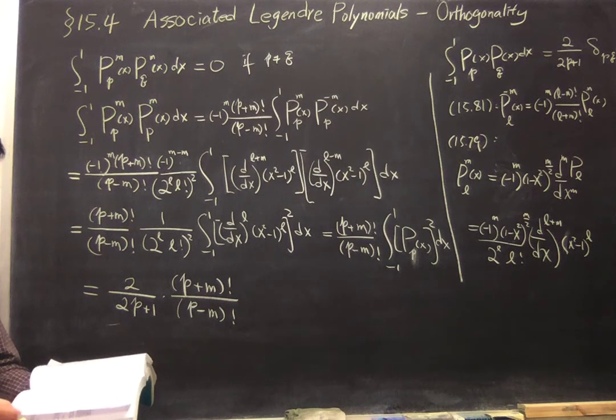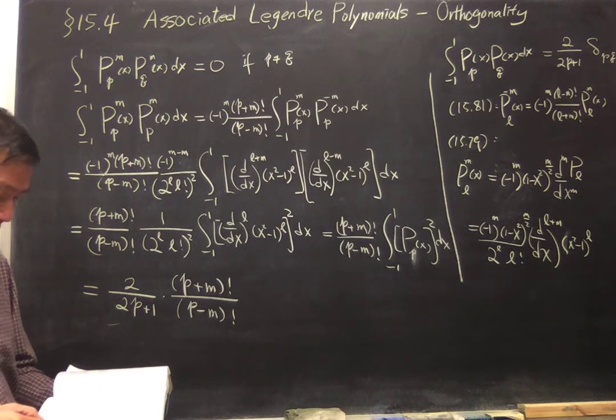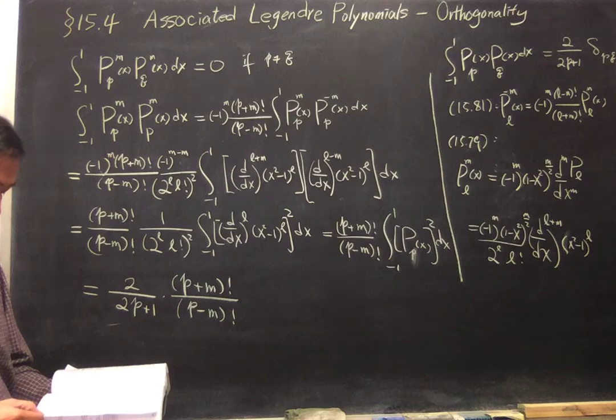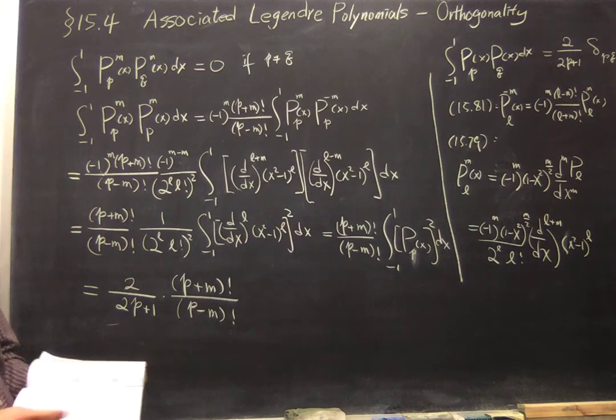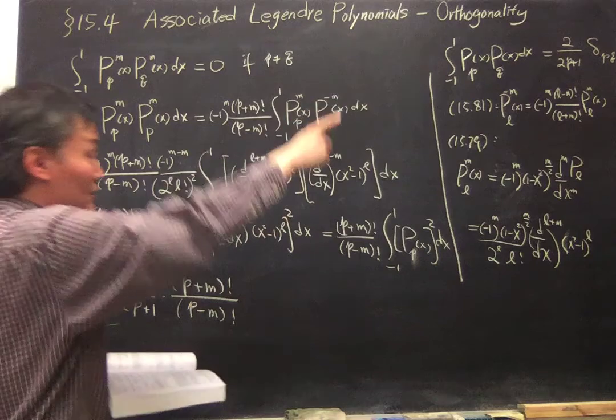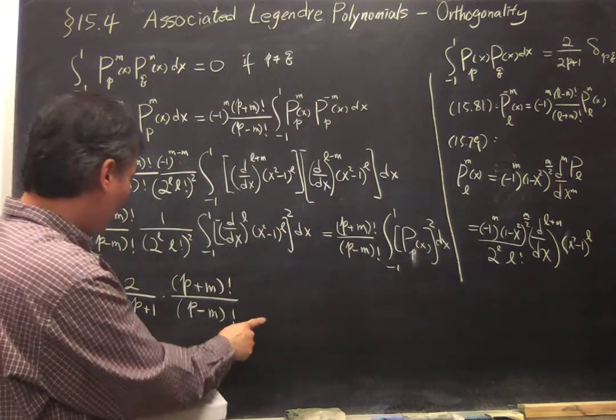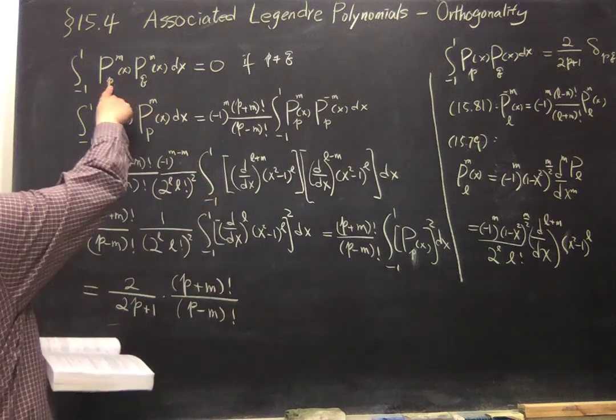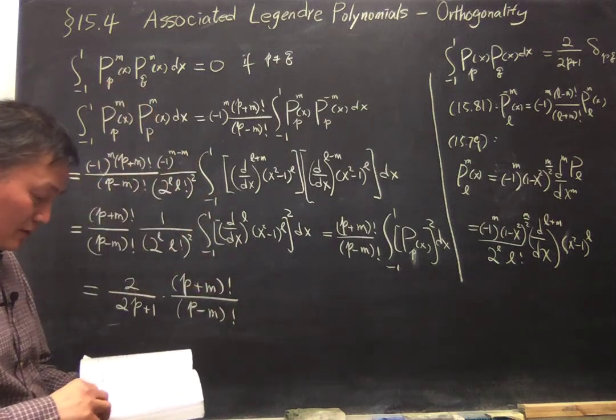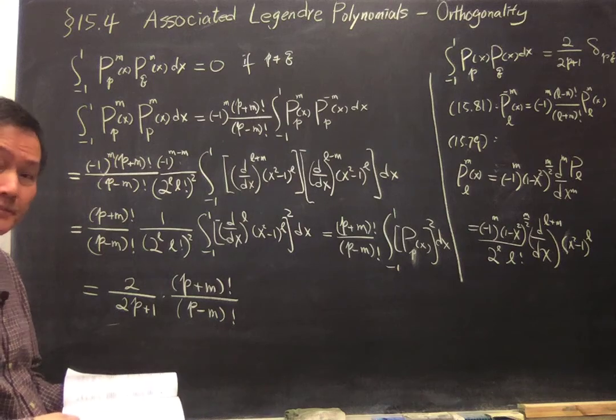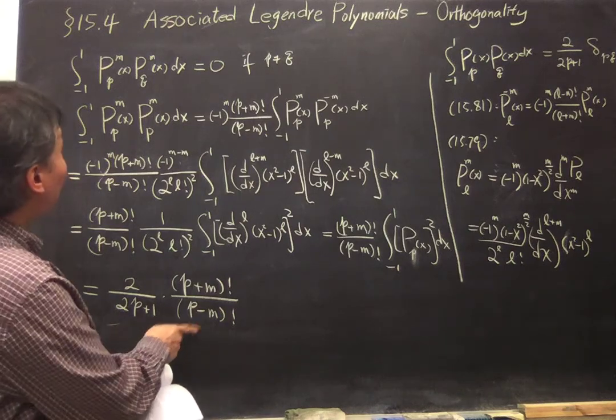That is equation 15.104. Combining this, you can put a delta PQ in here for the situation of P not equals to Q. That's the normalization constant.